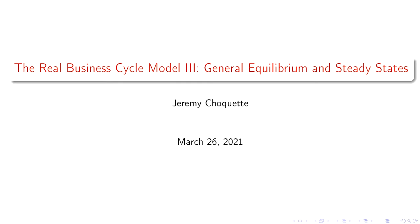What we want to do is impose a shock to one of these equations and see what variables respond — when they respond, how they respond, the direction, the magnitude, and whether they return to the original flat line, which is the steady state. If it converges to the original steady state, that's a transitory or temporary shock. If it achieves a new steady state after the shock, that's a permanent shock.